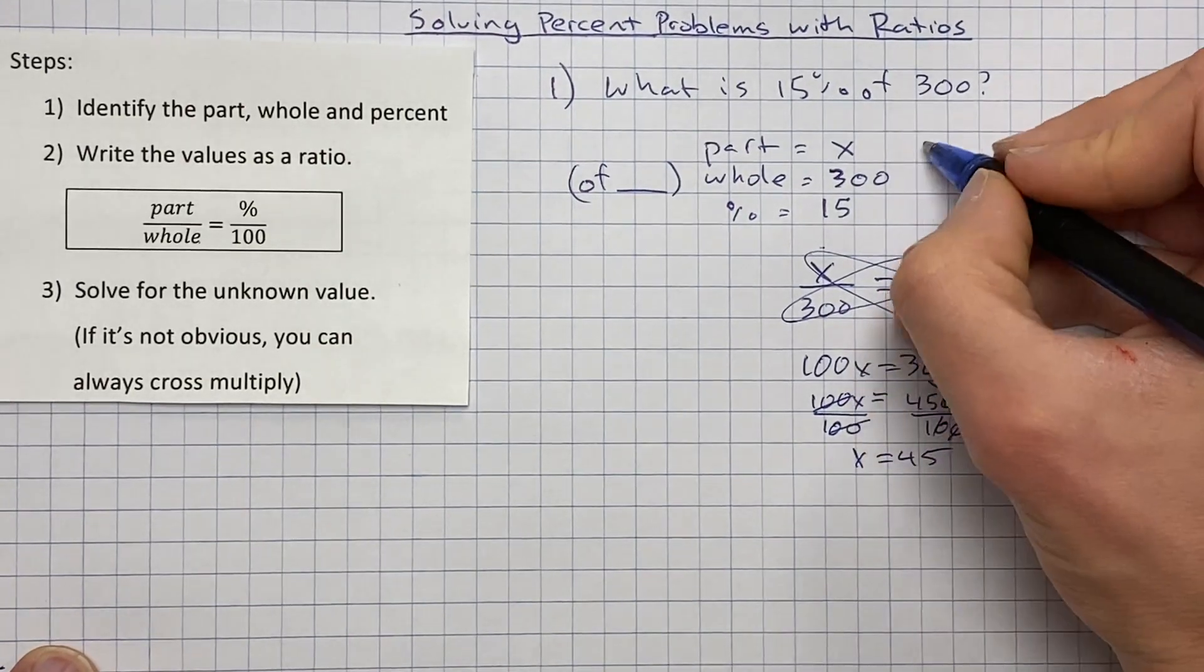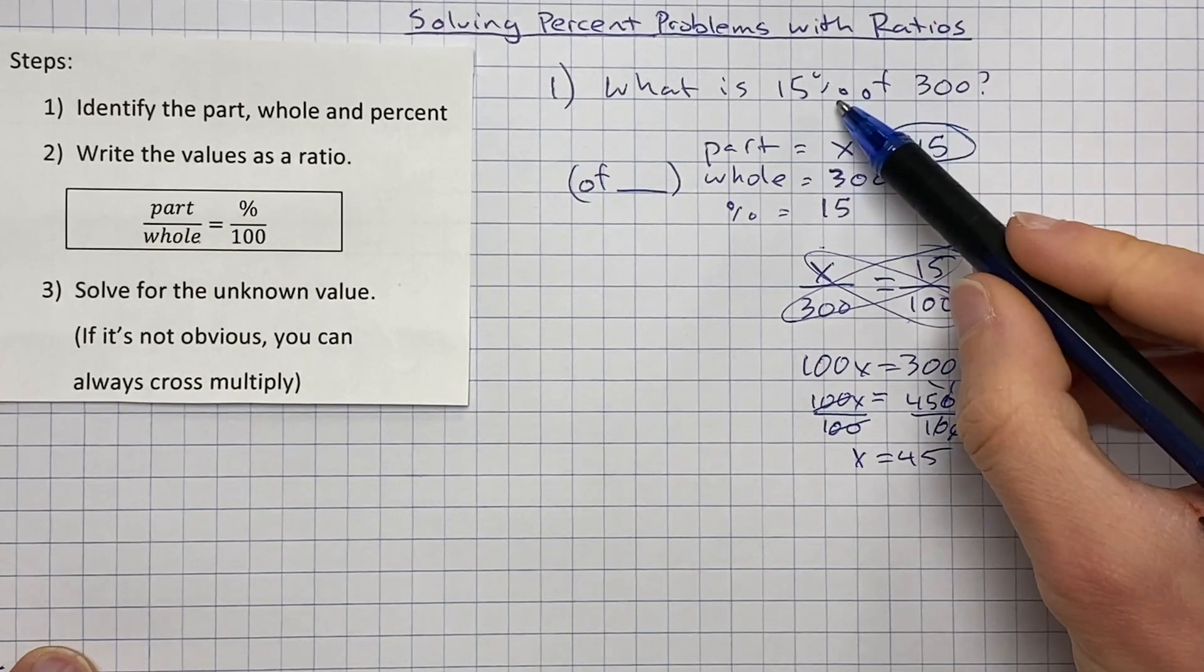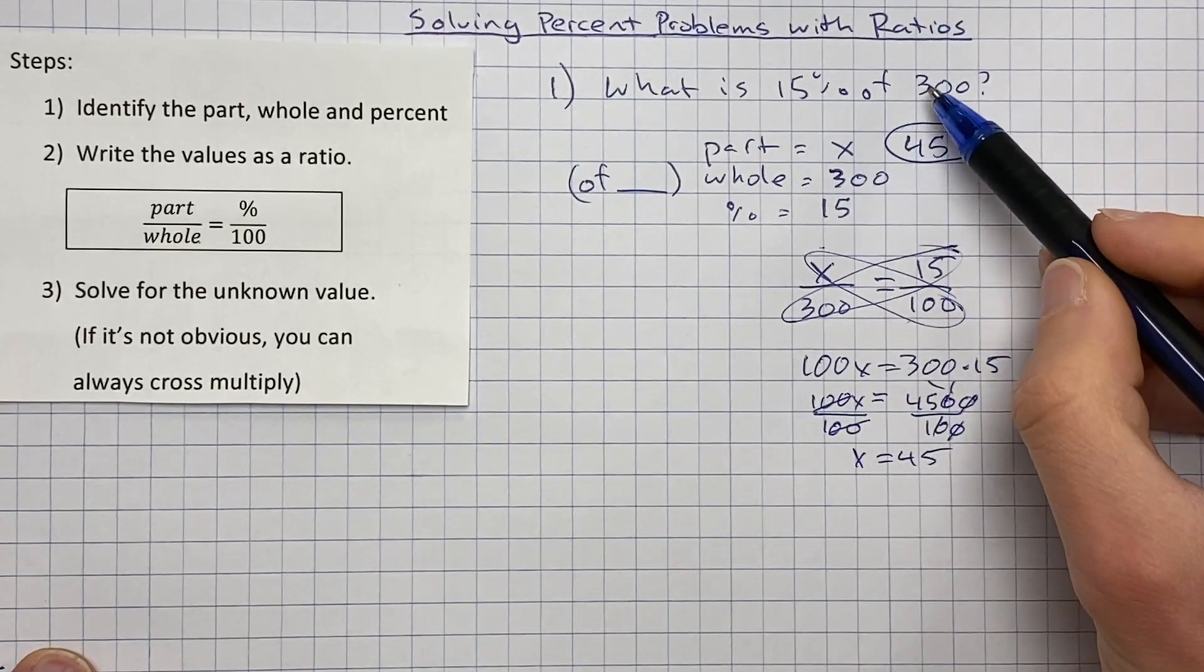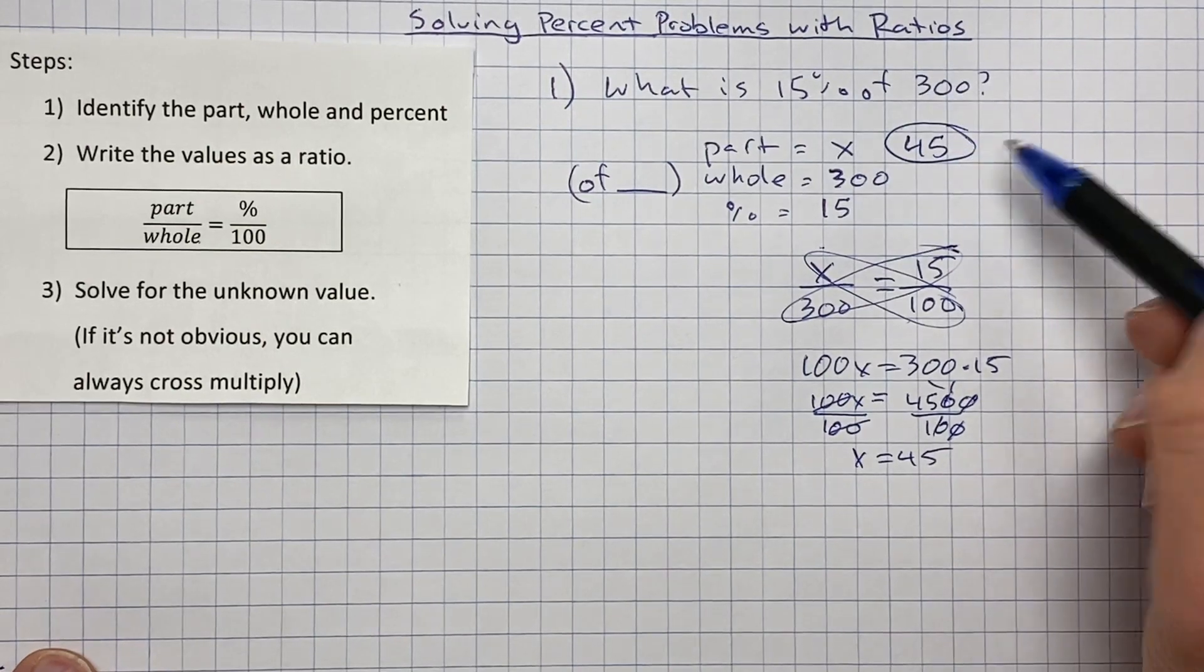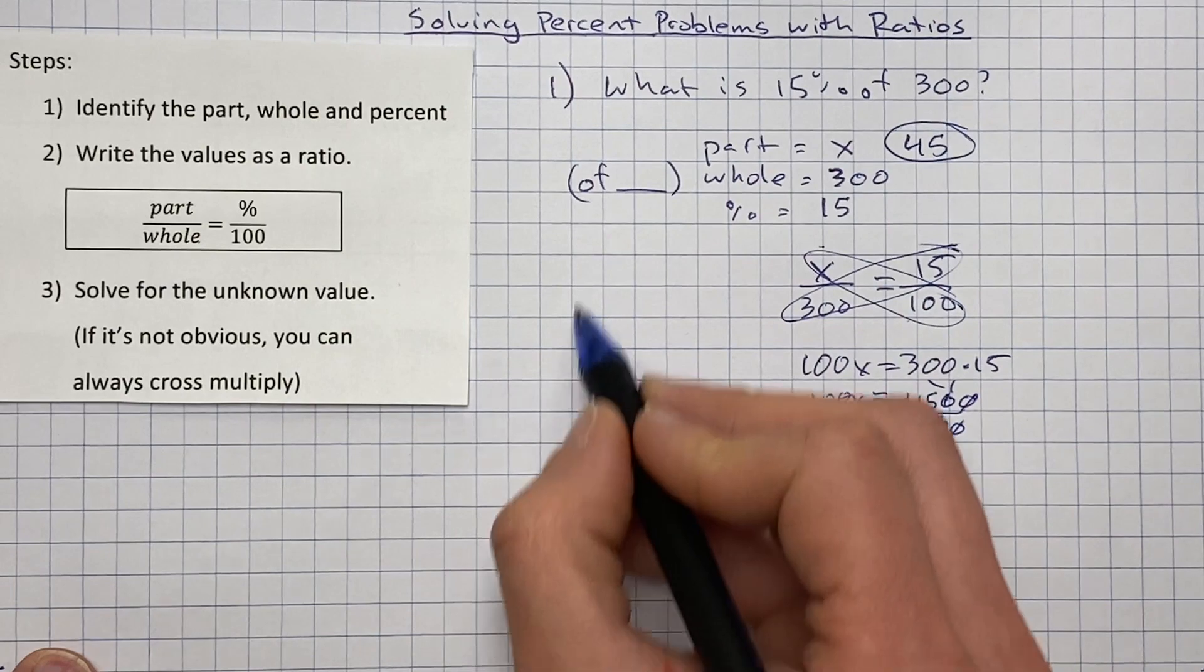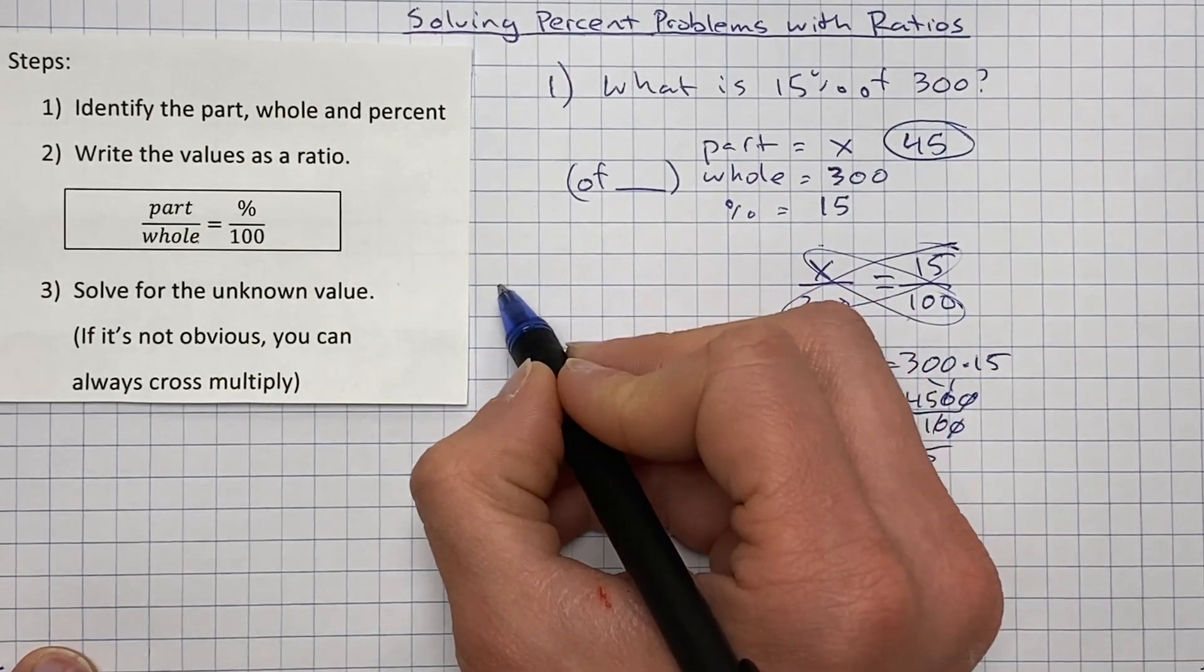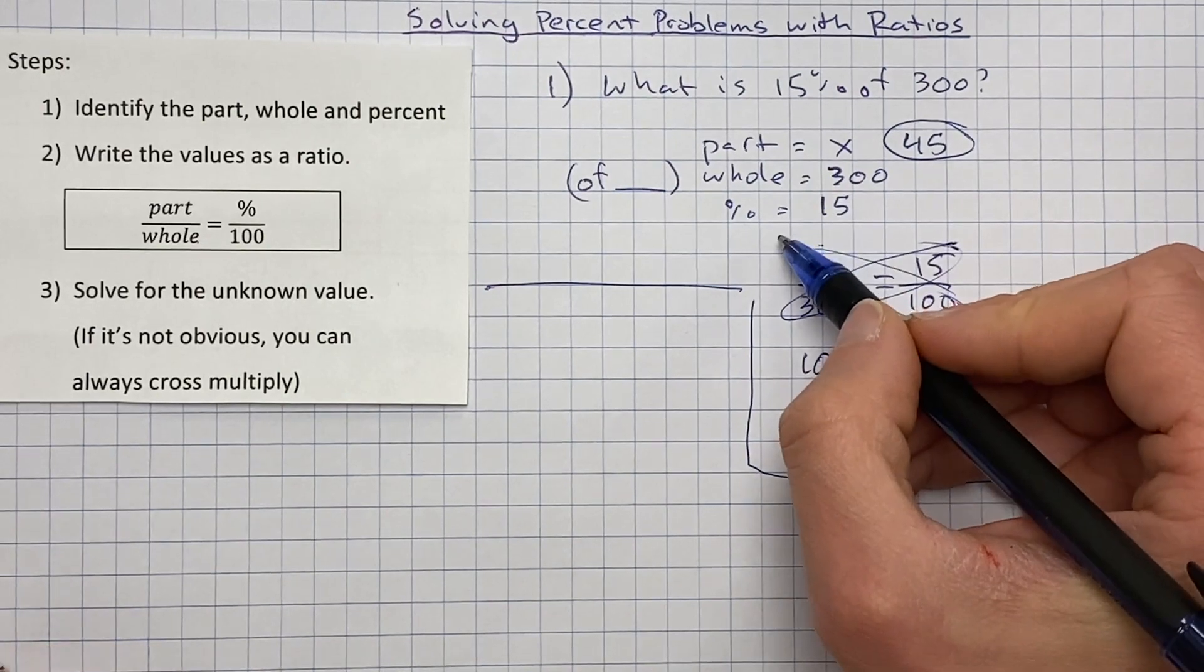I'm going to put that back up here and think 45. 45, does that make sense? Is that 15% of 300? Now, 15% is a small amount of 300, 45 definitely is a small amount of 300. That does seem reasonable. And so that is our answer right there. So just by using those three things and identifying them, we can solve them.